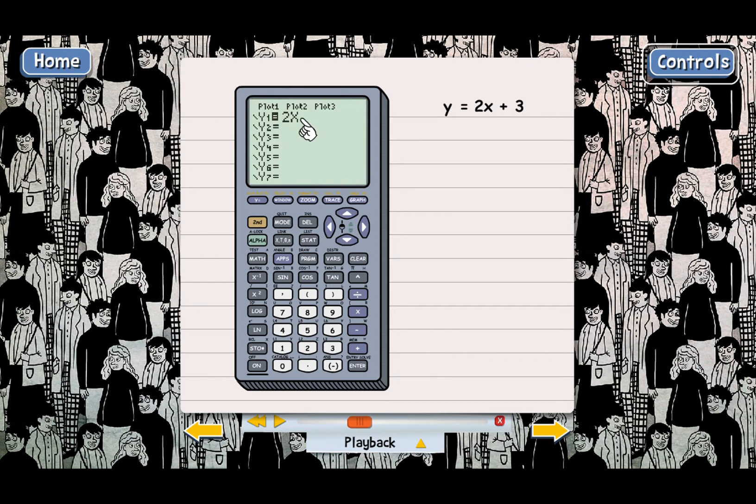That's right. See, it puts in an x, and now the next step is we need to enter plus 3. Why don't you do that yourself? Just click on the plus key—that's down here—and then click on the 3. Go ahead.